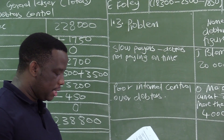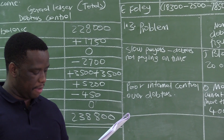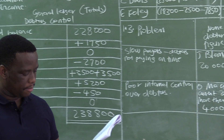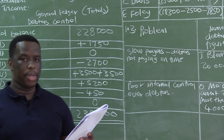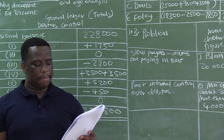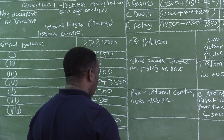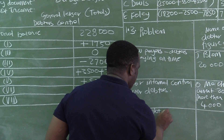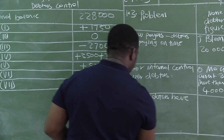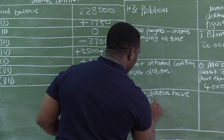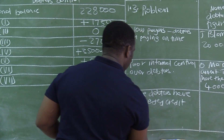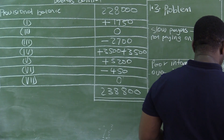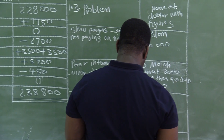Another problem noticed in this debtors' age analysis is that debtors are given credit limits. For example, ZPhi — the credit limit is R22,000 but the balance owing is R29,000. So some debtors have exceeded their credit limit. The name of the debtor is ZPhi.